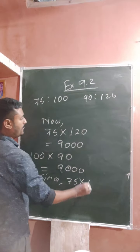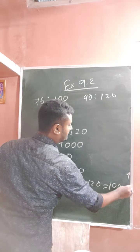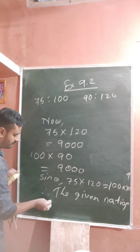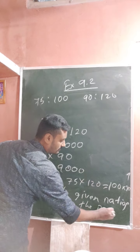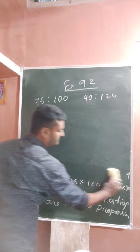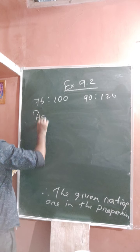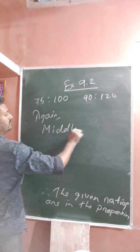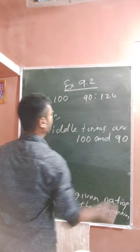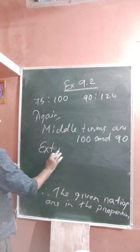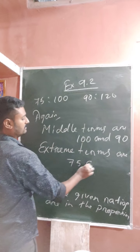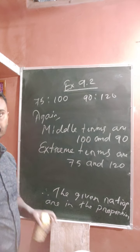Since 75 × 120 = 100 × 90, i.e., 9000 = 9000, therefore the given ratios are in proportion. The answer is yes. The middle terms are 100 and 90, and the extreme terms are 75 and 120.